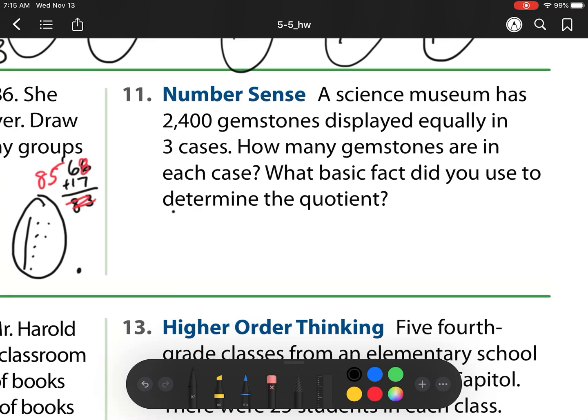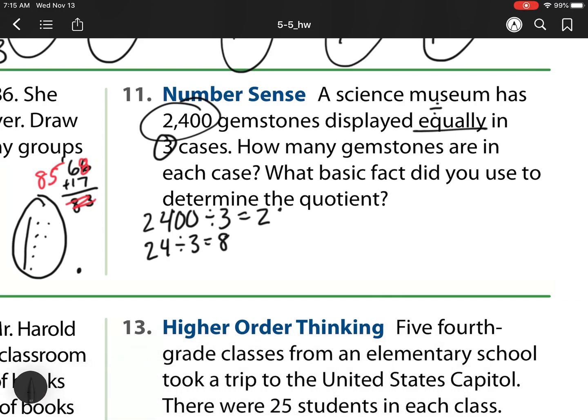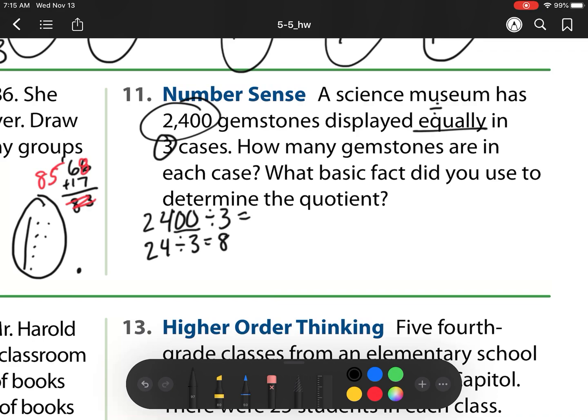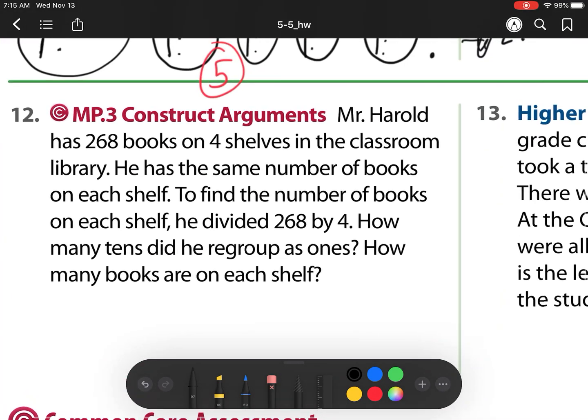Number 11. A science museum has 2,400 gemstones displayed equally in 3 cases. So if I'm displaying, I'm breaking that up into groups of 3. How many gemstones are in each case? What basic factors used to determine the quotient? Well, I know I'm doing this problem. And from our previous lesson, my basic math fact is 24 divided by 3, which is 8. So here I need to add those two zeros to my basic math fact. So there's going to be 800 gemstones in one case. And my basic math fact is that 24 divided by 3.